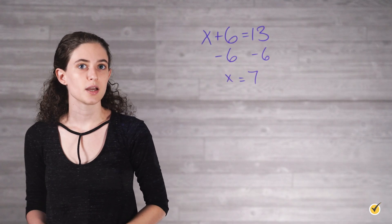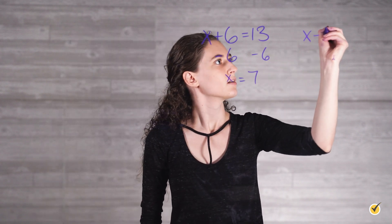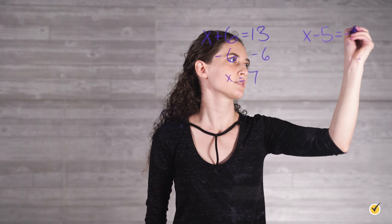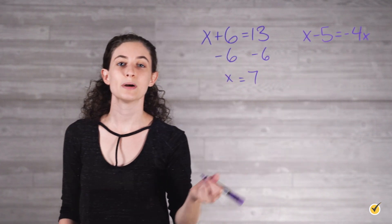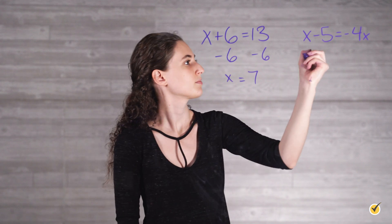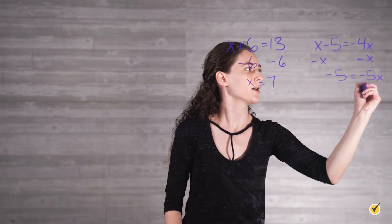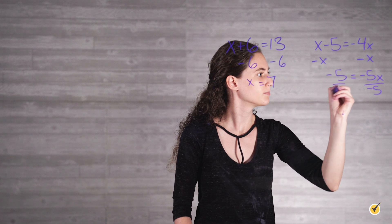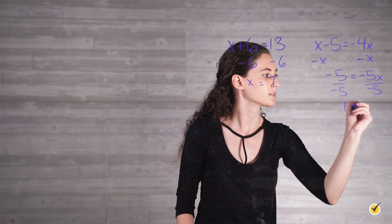By the same token, in the equation x minus 5 equals negative 4x, we might subtract x from both sides to make a zero and find the solution. Then we'll divide by negative 5 on both sides to get that x equals 1.